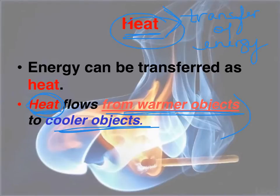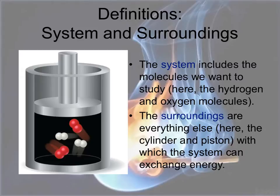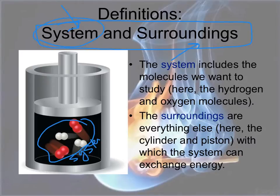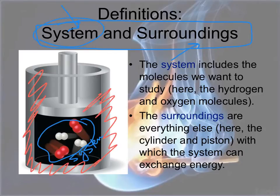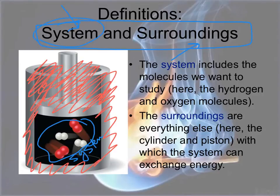One final definition is in thermochemistry you will hear us referring to a system and the surroundings. The system is anything you want to study. Typically in thermochemistry, it's a bunch of molecules or a chemical reaction, so this would be your system. The surroundings is anything around those molecules or the chemical reaction that can potentially interact with the system and exchange energy or heat with it.